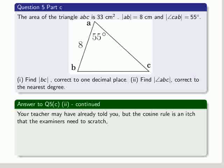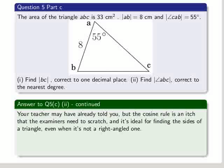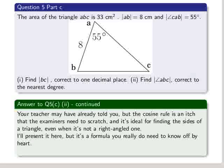Your teacher may have already told you, but the cosine rule is an itch that the examiners need to scratch. It's ideal for finding the sides of a triangle, even when it's not a right-angled one. I'll present it here, but it's a formula you really need to know off by heart.